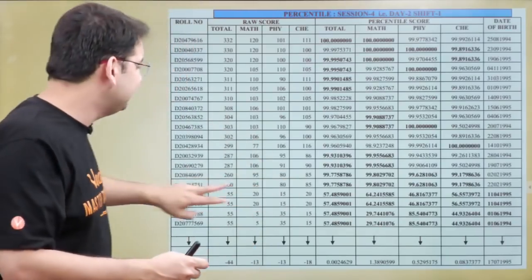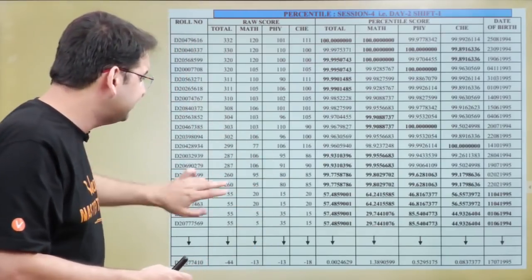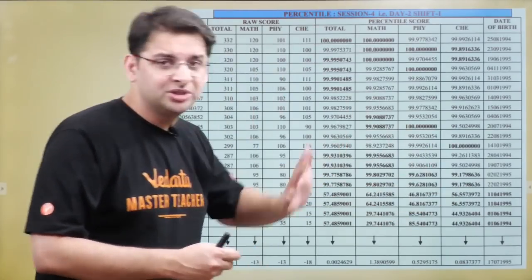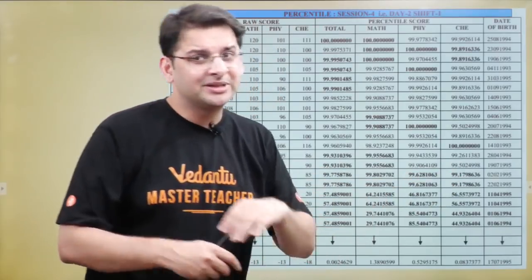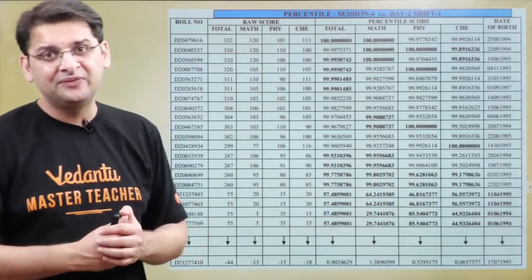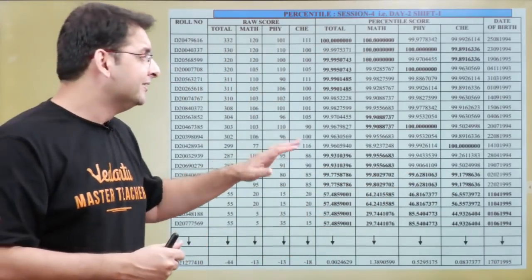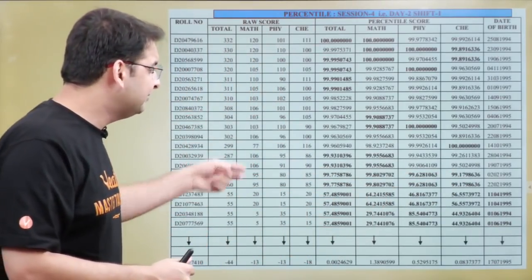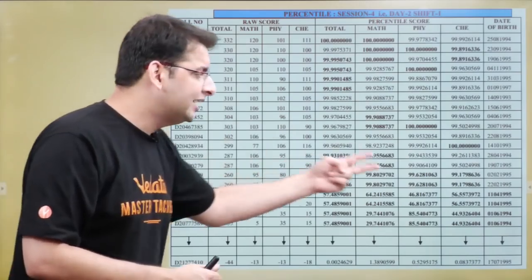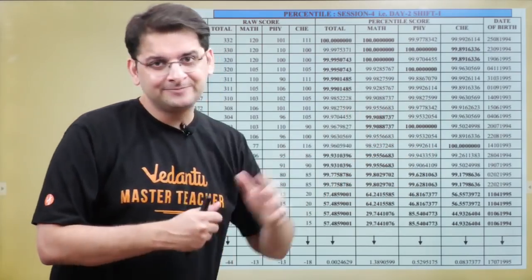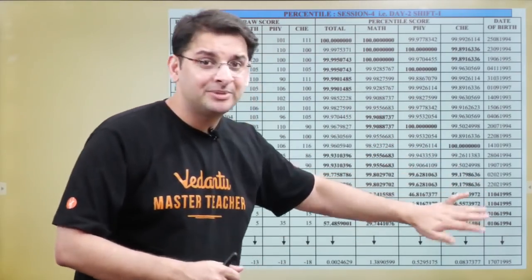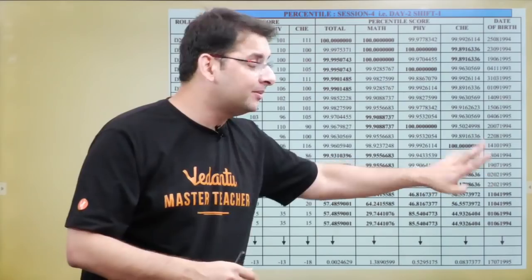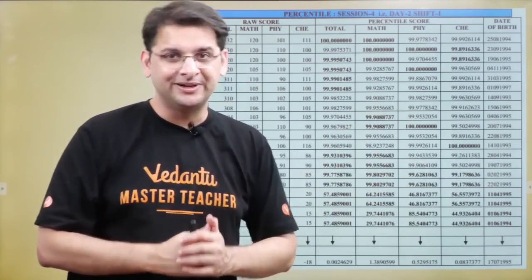Even in the same session, if two students have the same score, it can come down to date of birth — but otherwise it is very difficult for two students to have exactly the same percentile in all subjects across all sessions. It is rare, but the tiebreaker system covers it.